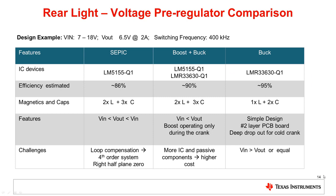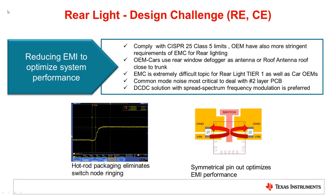For a voltage pre-regulator, different kinds of topologies can be used. This table shows a short comparison between different types of voltage pre-regulators. The best solution in a rear lamp application is mainly dependent on the operating input voltage range and the LED string voltage. When using switching regulators in rear light applications, reducing electromagnetic interference is a big challenge. There are several areas where EMI can be reduced, such as good layout techniques, PCB stack-up, snubber circuits, and using filter components. On a device level, the new TI hot rod IC package and spread spectrum feature make the design easier to pass the EMI limit lines.